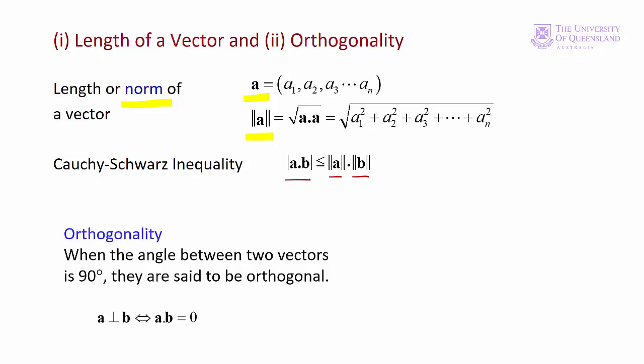Finally when two vectors are at right angles to each other, they're said to be orthogonal. The dot product of orthogonal vectors is zero. We represent orthogonality between two vectors like this: so if A and B are orthogonal, then the dot product is zero.